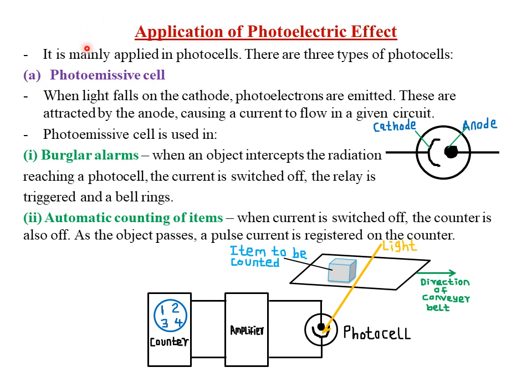Today we are looking at applications of photoelectric effect, specifically photo cells. There are three types: the photoemissive cells, the photovoltaic cells, and the photo conductive cells, which are also called LDR — light dependent resistors. In this lesson we'll discuss all three types.